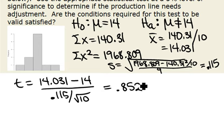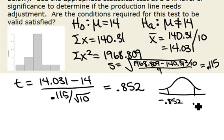Now we want to find our p-value in our table. What our p-value looks like in picture form is we want the area in both tails because we're doing a not equal to test. So we have negative 0.852 and positive 0.852, and we want this area beyond the two tails.